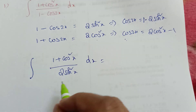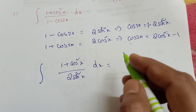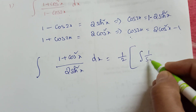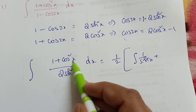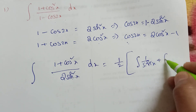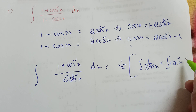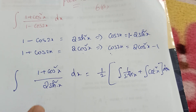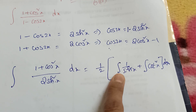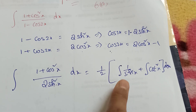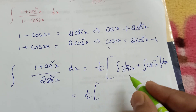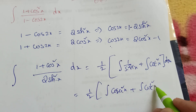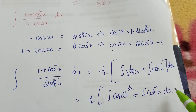So we write 2sin²x in the denominator dx. Now split into two terms: take 1/2 as a common factor outside the whole integration. Then we get integration of 1/sin²x plus integration of cos²x/sin²x. Cos by sine is cot, so the second term gives cot²x. So we have integration of cosecant²x plus integration of cot²x dx.